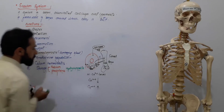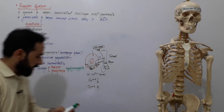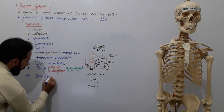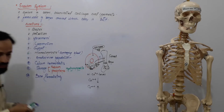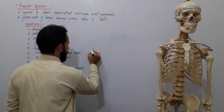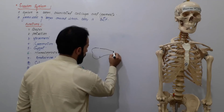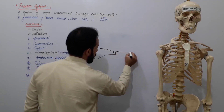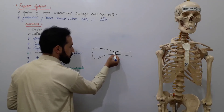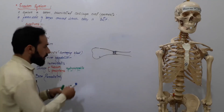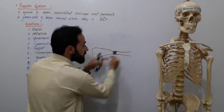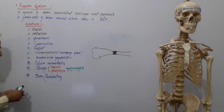We will discuss hydroxyapatite in detail when we cover the structure of the bone. The next function is bone remodeling. Whenever there is a fracture, the bone cells present there start to migrate and undergo mitosis, filling the cavity and remodeling the bone. So the skeletal system is responsible for bone remodeling.